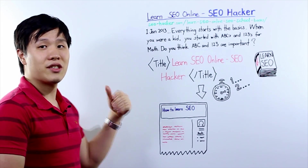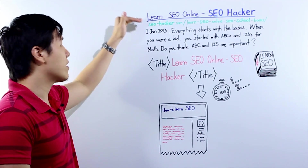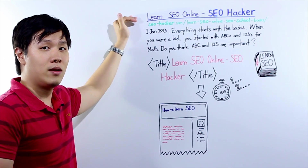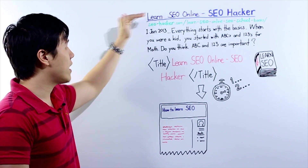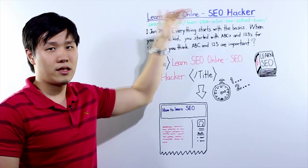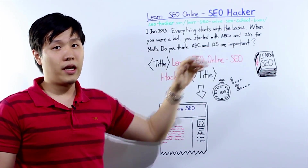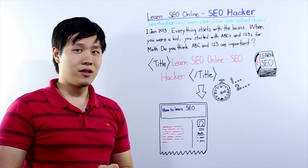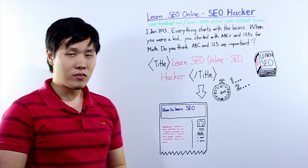In the search engine results page, this is how your title tag or SEO title would look like — 'Learn SEO online, SEO Hacker' — the blue text that you're familiar with because you see it every time you search.